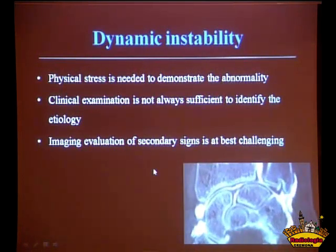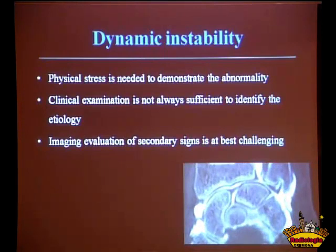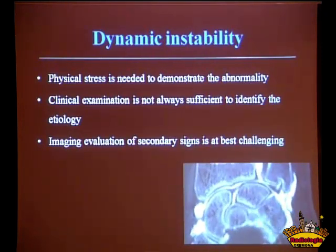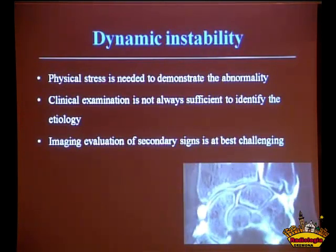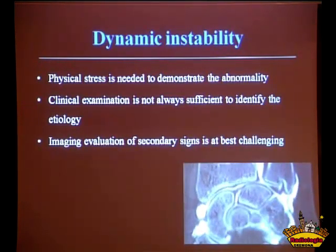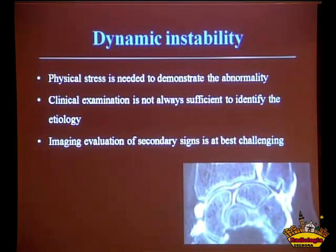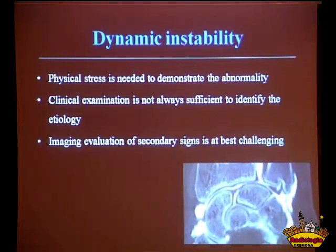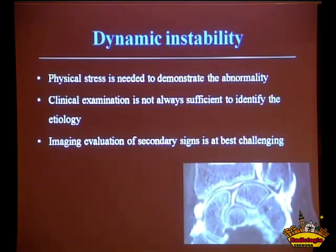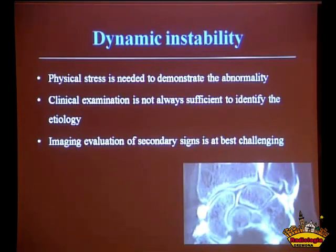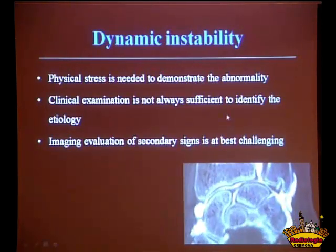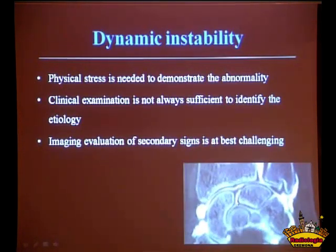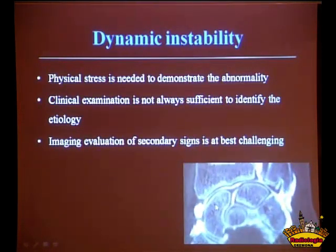Another very interesting application of this technique is the evaluation of dynamic instability. In this type of disorder, physical stress is needed to demonstrate the abnormality, and clinical examination is not always sufficient to tell exactly what structure is damaged. The implication of joint instability based on secondary signs from conventional static images is at best challenging, not to say impossible. This is the aspect of a normal scapholunate ligament during stress — you can see it stretches and goes back to its original position, and there is no significant bone movement.